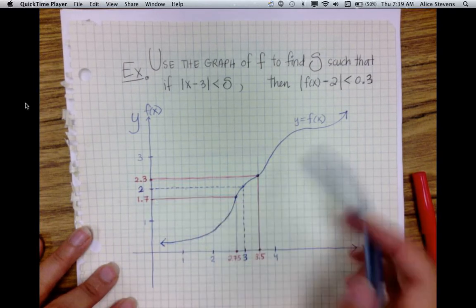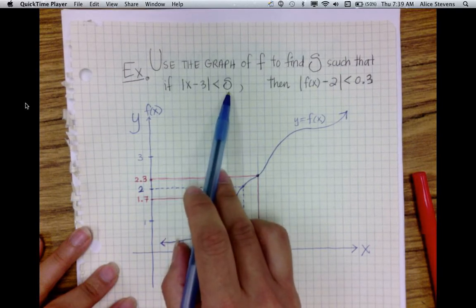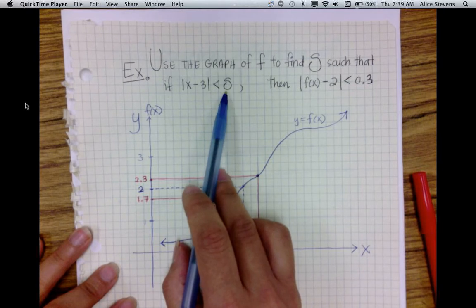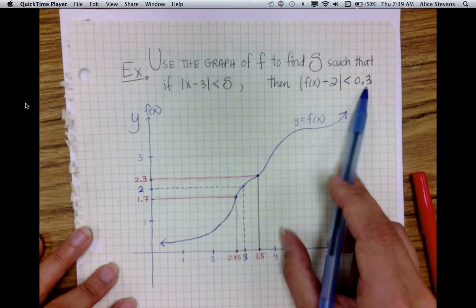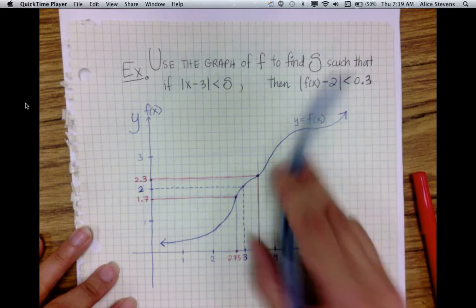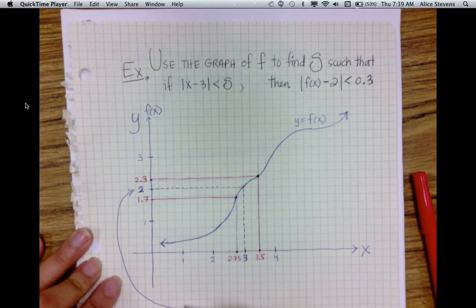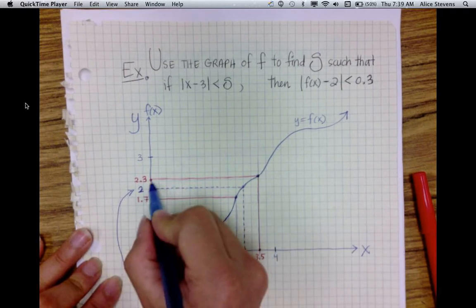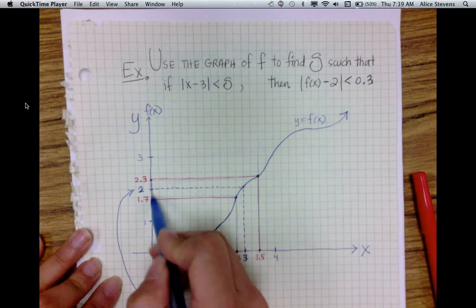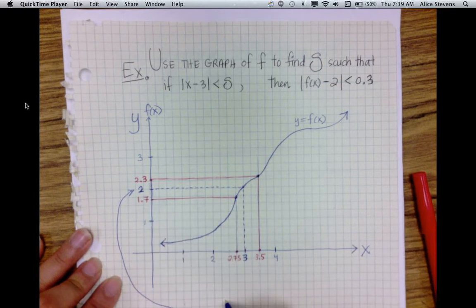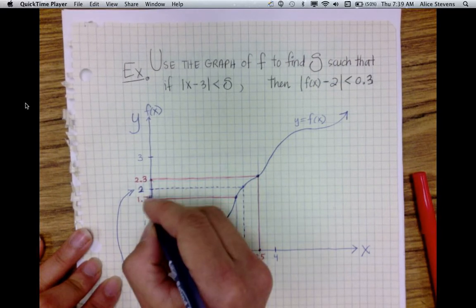Now that I've located what I'm looking for, I want to find delta — a distance — such that as long as I'm within this distance of 3, my outputs are going to be within this distance of 2. Going over to this axis, this is the set of values where the distance between f of x and 2 is less than 0.3, because this goes from 1.7 to 2.3.